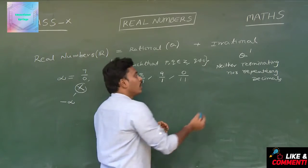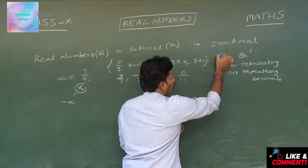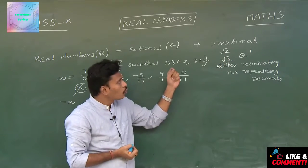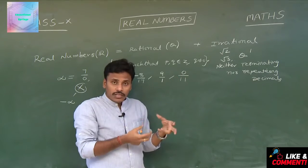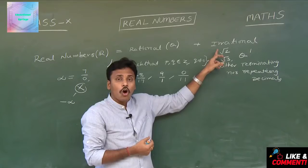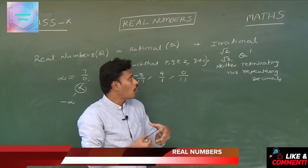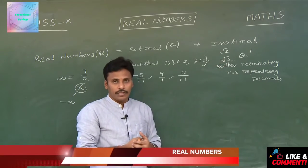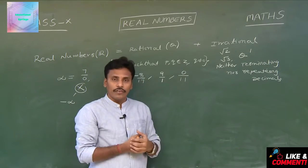You know that the decimal expansions of numbers such as root 2, root 3, and similar numbers — you learnt the division process to calculate the decimal expansion for such numbers. All these numbers are neither terminating nor repeating decimals, so we call all numbers of such format irrationals. Square root of all non-perfect squares are irrationals.